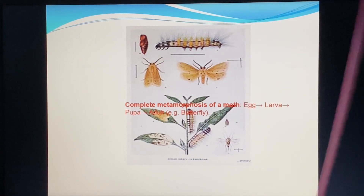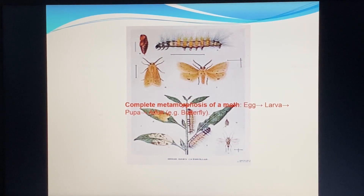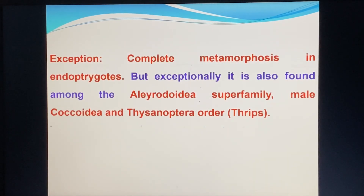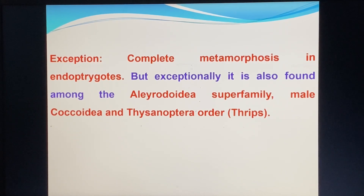Egg, larva, and pupa. Complete metamorphosis is found in the endopterygotes, but exceptions are also found among the Aleurodidae, Psocidae, and Thysanoptera.